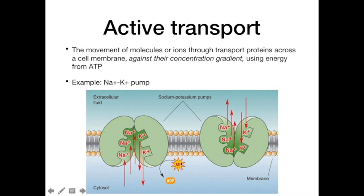Each cycle of the sodium-potassium pump uses one ATP molecule. Since both sodium and potassium ions are positively charged, the net result is that the inside of the cell becomes more negative than the outside, creating a potential difference across the membrane. The sodium-potassium pump is a transmembrane carrier protein that uses ATP and therefore performs active transport. We will look at it in greater detail during the physiology section.